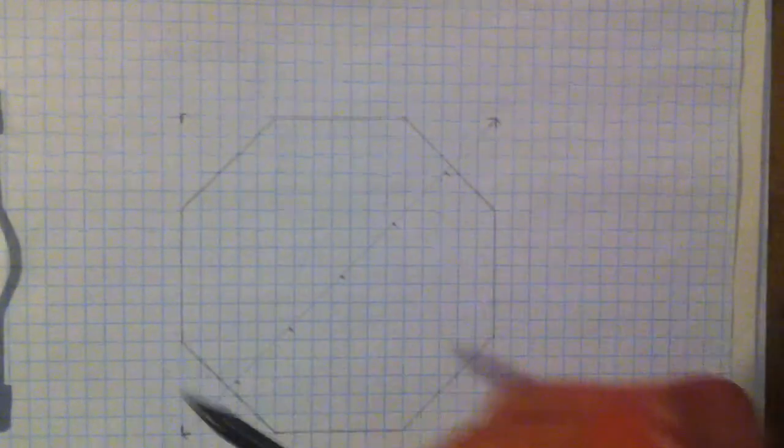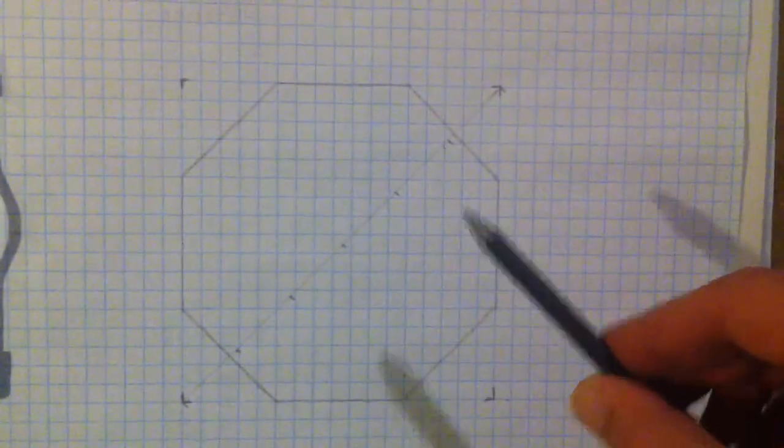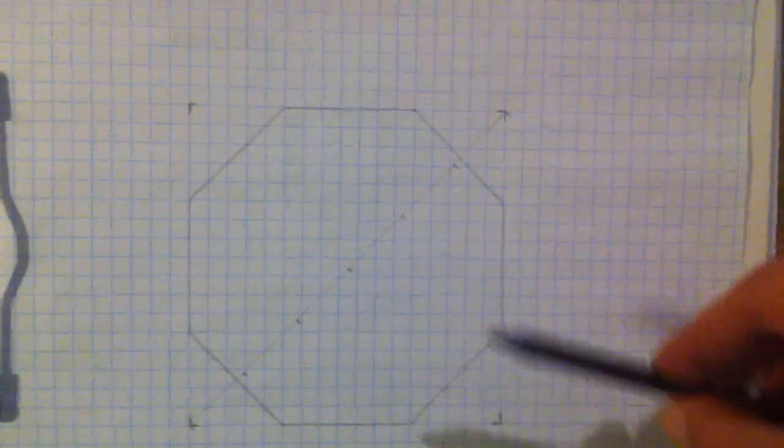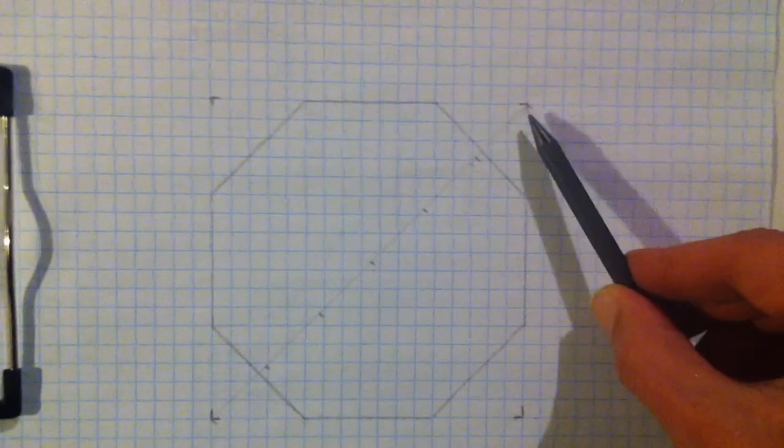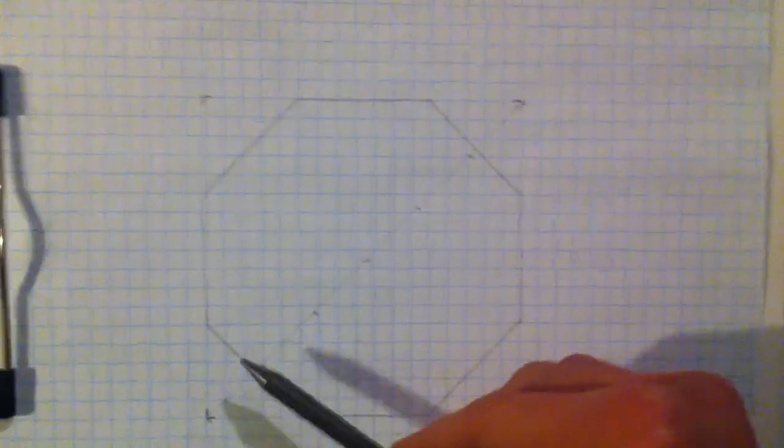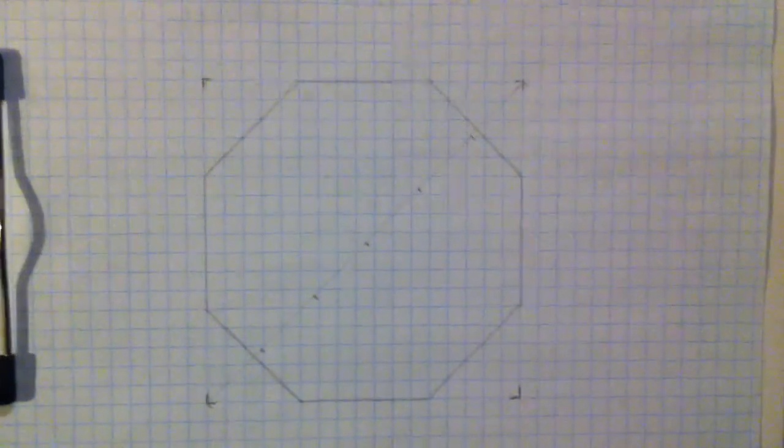If you draw the octagon and find the square, you'll find that from one corner to another corner it's exactly six inches.